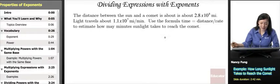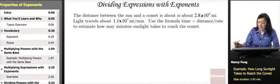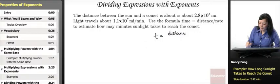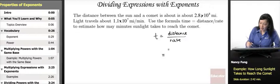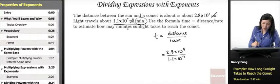Let's try dividing expressions with exponents. The distance between the sun and a comet is about 2.8 times 10 to the 8th miles. Light travels about 1.1 times 10 to the 7th miles per minute. Using the formula time equals distance over rate, we substitute: time equals 2.8 times 10 to the 8th divided by 1.1 times 10 to the 7th. Notice the miles cancel out and you're left with minutes.